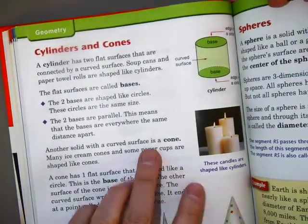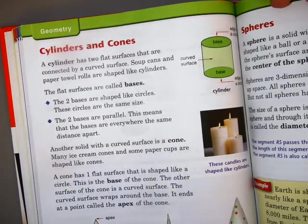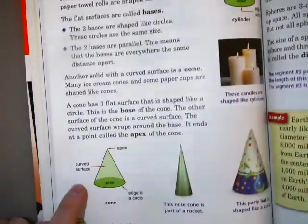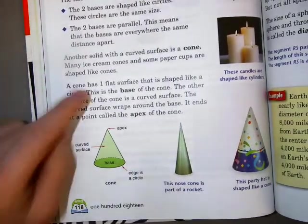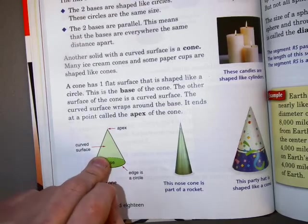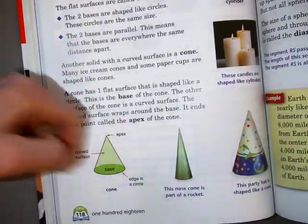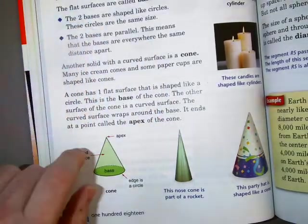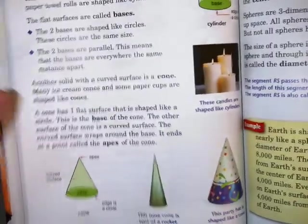Another solid with a curved surface is a cone. Many ice cream cones, some paper cups are shaped like cones. A cone has one flat surface shaped like a circle, that's the base. The other surface of the cone is a curved surface. The curved surface wraps around the base at a point called the apex. The apex is right up here, where it comes together.